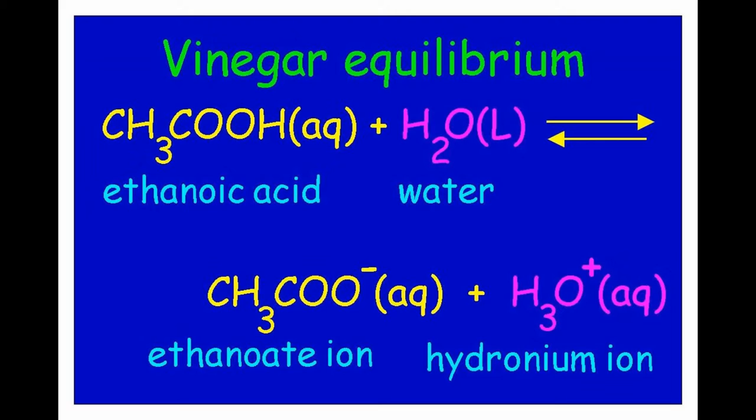Here concentrated vinegar is reacted with water, which acts as the base. Ethanoic acid is a weak acid and water is certainly a weak base. The equilibrium produced is stronger to the left, making it possible to drink the mixture, which forms only a few of the nasty hydronium ions.